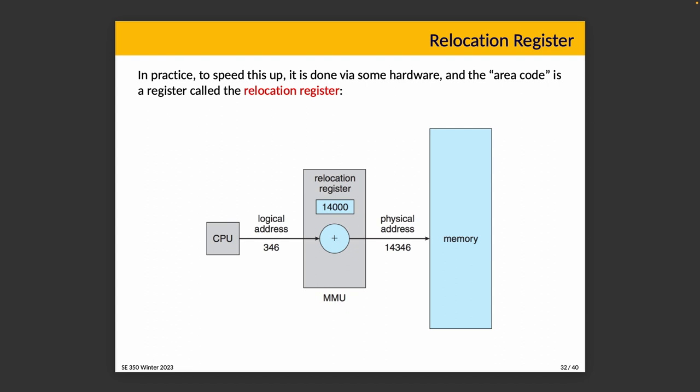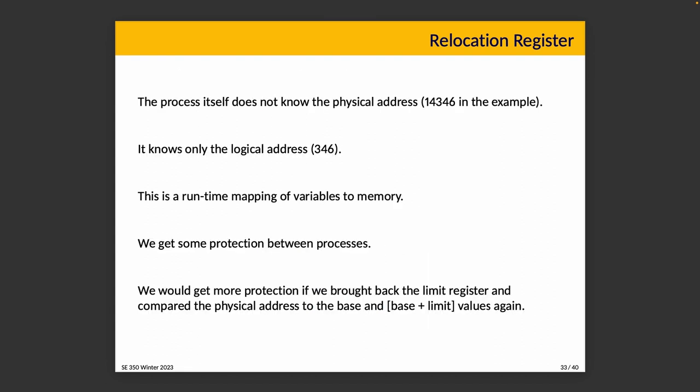Given a relocation register, we have some real benefits. The process itself doesn't know the physical address — it only knows the logical address it wants to issue, like 346. We get a runtime mapping of variables to their physical memory location. We also get some protection between processes, because basically you can't dial outside your area code. We get even more protection if we bring back base and limit registers, comparing the physical address to base and base-plus-limit to ensure we stay in the right area.